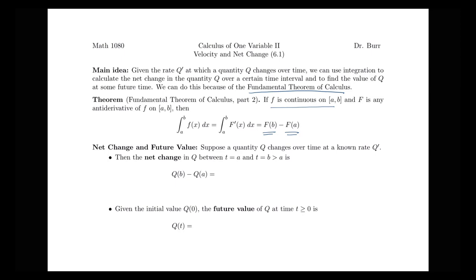Let's think about how we can use this idea to talk about the net change problem. Suppose we have a quantity q that's changing over time at a known rate q prime. Then the net change in q between t equals a and t equals b is represented by q(b) minus q(a), which equals the integral from a to b of q'(t) dt. We integrate the rate over the interval from a to b, and that equals the antiderivative evaluated at b minus the antiderivative evaluated at a.